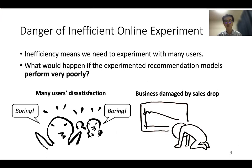Inefficient online experimentation is dangerous. Inefficiency means we need to experiment with many users. What would happen if the experimented recommendation models perform very poorly? Possibly, many users blame your service and your business could be damaged by a sales drop. We want to avoid these situations.